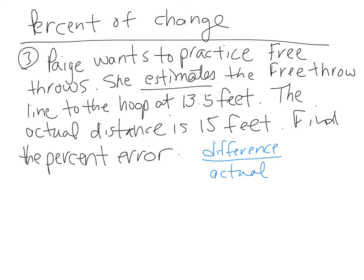So Paige wants to practice free throws. She estimates the free throw line to the hoop at 13 and a half feet. The actual distance is 15 feet. Find the percent of error. So she made a mistake. She's not too far off.